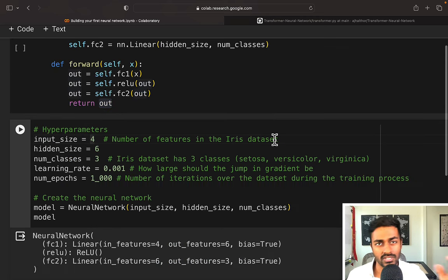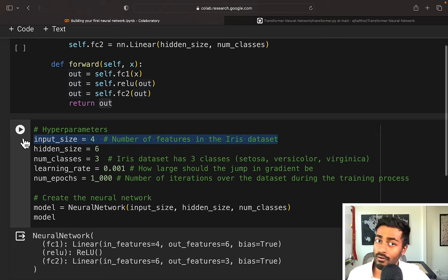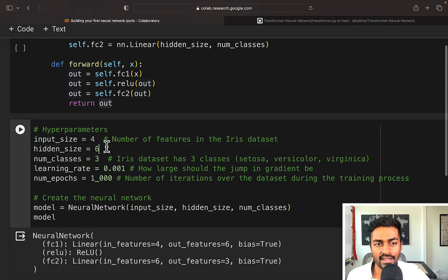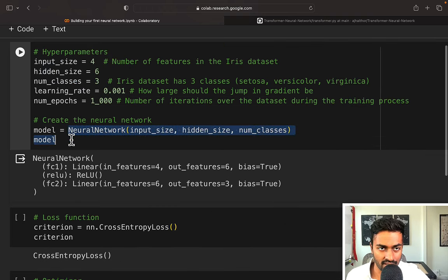We then initialize hyperparameters depending on the dataset that we have. For example, we have an input size of four because we have four features. The hidden layers, there's going to be six neurons in the hidden layer, and number of classes is three because there are three categorizations right here. We'll initialize a learning rate, which defines how fast we want this network to learn. Then we define number of epochs, which is how many times are we going to look at all 120 examples in our training set in order to learn. And then we initialize our neural network accordingly.